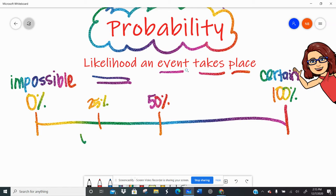And then obviously there's all the percents in between. Twenty-five percent, well that's unlikely that something would happen. Where seventy-five percent would be likely that something would happen. The probability that I love you guys all so much is a hundred percent. I am certain of it. So probability is all about the percentage of which something might happen or an event takes place.